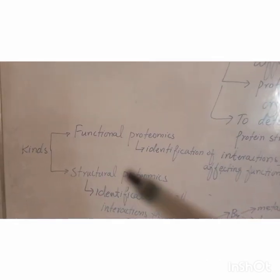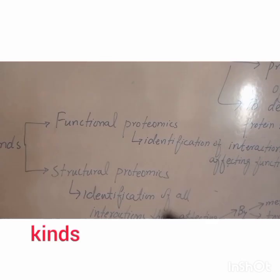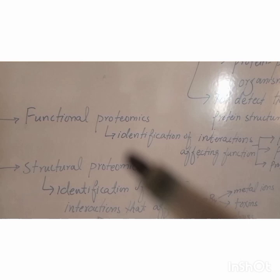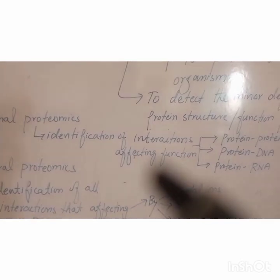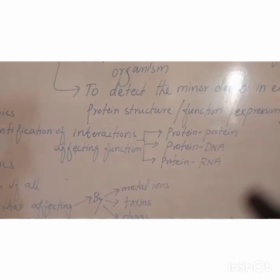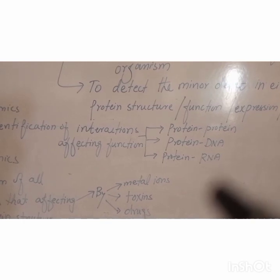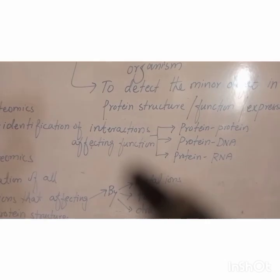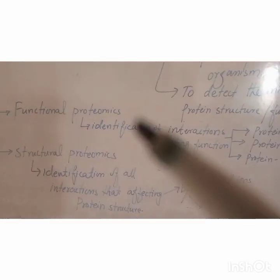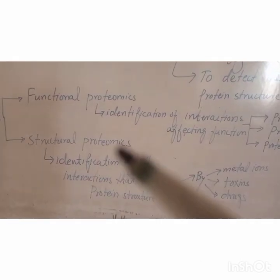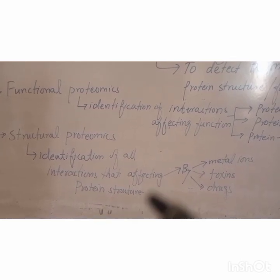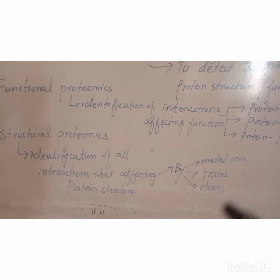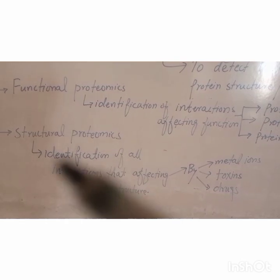Kinds of proteomics are functional proteomics and structural proteomics. Functional proteomics means the identification of interactions affecting the functions, including protein-protein interaction, protein-DNA interaction, and protein-RNA interaction. Structural proteomics is the identification of all interactions that affect the protein structure, including metal ions, toxins, or drugs.